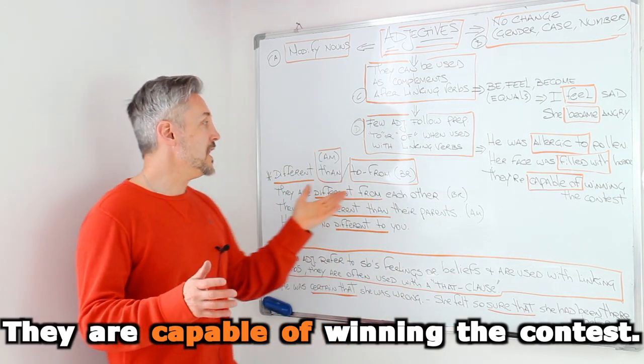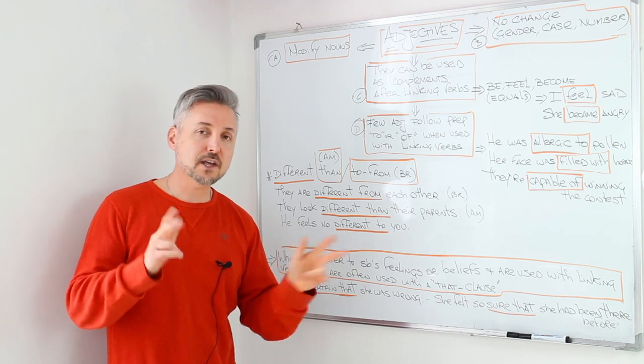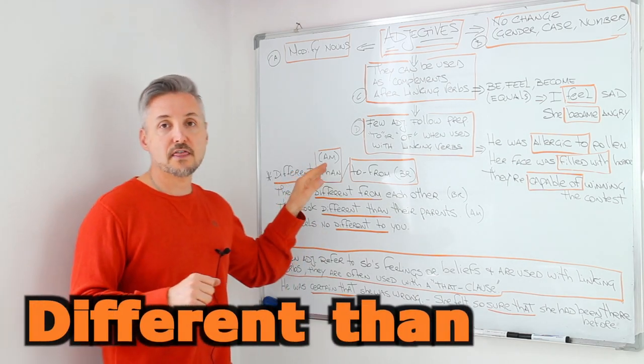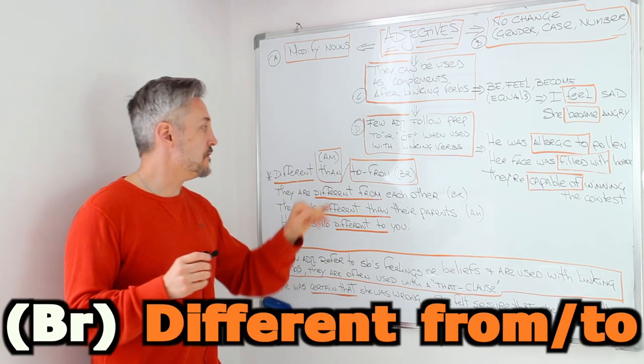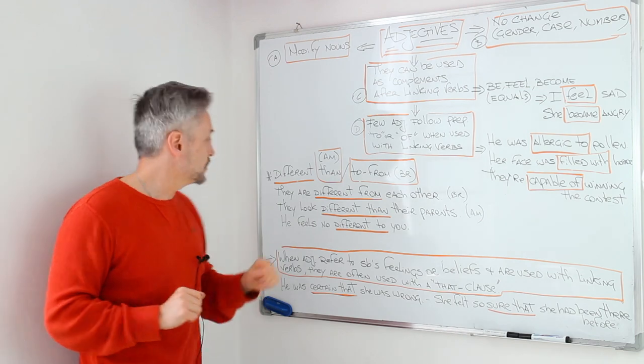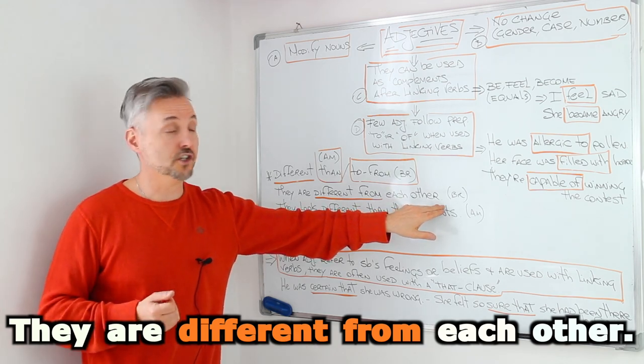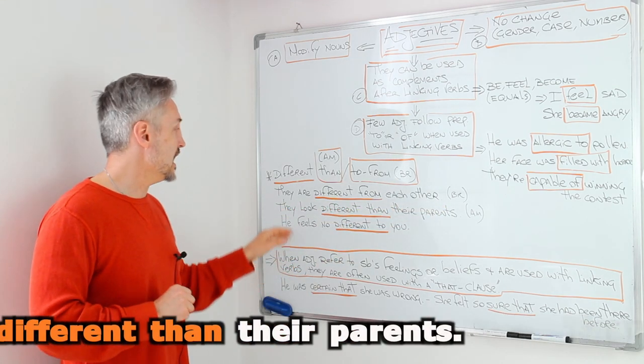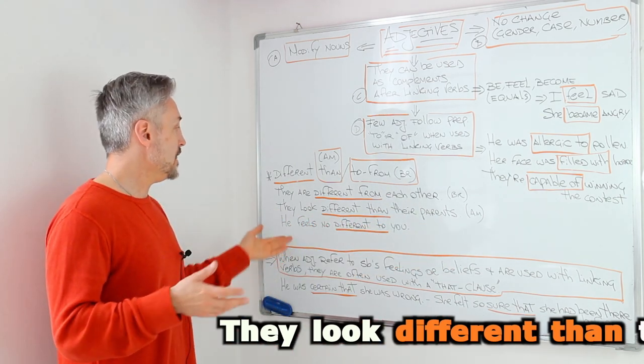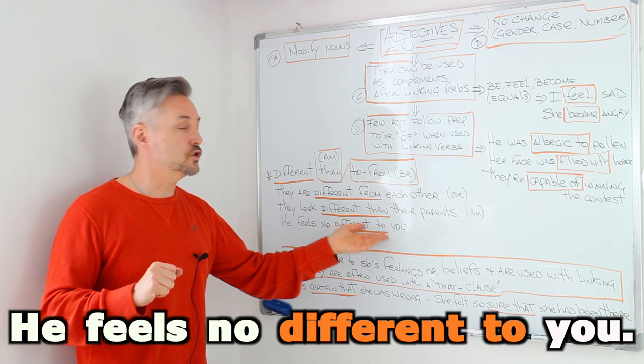Now, when adjectives like, for example, different, can have three choices. The first one is the one used in the United States in American English. So different than. In British English, they prefer to use from or to. So I listed three examples. They are different from each other. This is British English. In American English, you can say, they look different than their parents. And then the other example, which is British English. He feels no different to you.